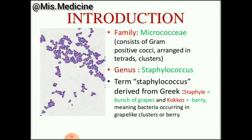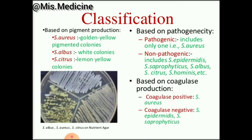Staphylococcus aureus are gram-positive cocci. They are arranged in tetrads and clusters. Staphylococcus means bunch of grapes; cocci means berry. So the name describes bacteria occurring in grape-like clusters.